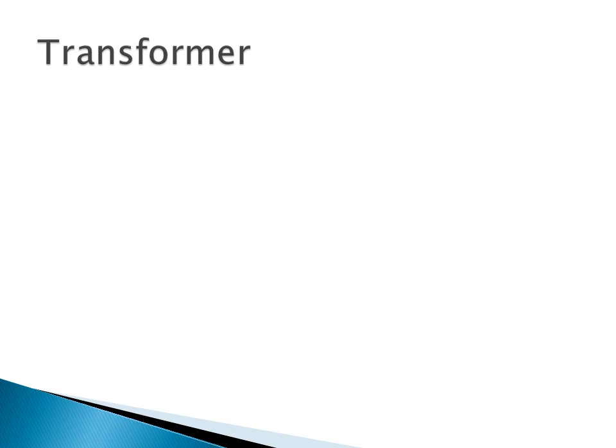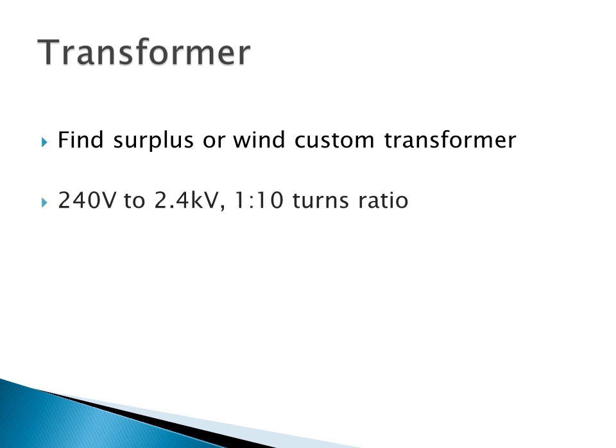The solution to this, of course, is to use a step-up and step-down transformer. These can be found surplus in a lot of different places, or they can be custom-made for particular applications. If we were to, say, consider using a 240 to 2.4 kV transformer, this can be custom-wound or found. We can reduce the losses by a factor of 1 over 100, in terms of losses in the copper.